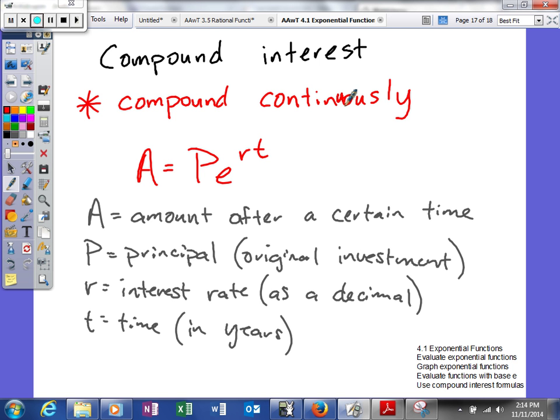For us to do that, what that basically means is they can compound your interest to the nanosecond. So if you deposit money and then take it out six months, two days, and four hours later, they can actually give you interest on that exact amount of time.